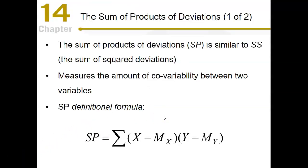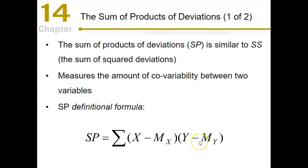The sum of products is the sum of deviations from the mean. In the definitional formula, we take the variable X, find its mean, and subtract the mean from every X value — something we've already been doing in the sum of squares. Then we do the same for Y: find its mean and subtract the mean from every Y data point.